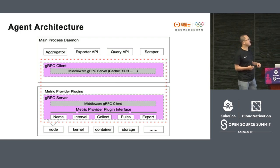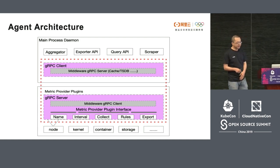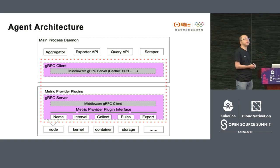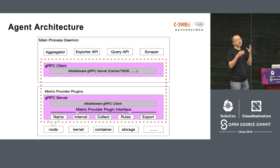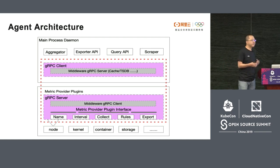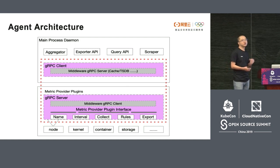So those are the two parts: the main process and the plugins. When the main process needs to visit the plugins, they can be started, and once they have finished, these plugins will just be closed. You can imagine that every time they are launched, used, and then closed — this reduces system overhead to the maximum extent. And all plugin content, once upgraded, will be automatically upgraded next time it's used.